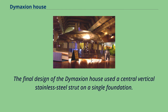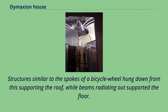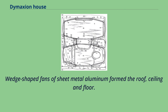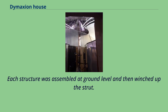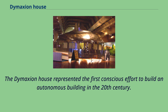The final design of the Dymaxion House used a central vertical stainless steel strut on a single foundation. Structures similar to the spokes of a bicycle wheel hung down from this, supporting the roof, while beams radiating out supported the floor. Wind-shaped fans of sheet metal aluminum formed the roof, ceiling, and floor. Each structure was assembled at ground level and then winched up the strut.